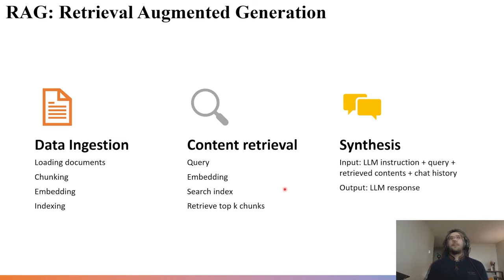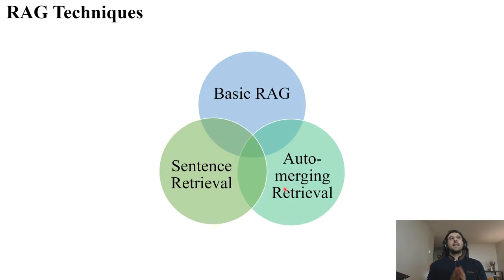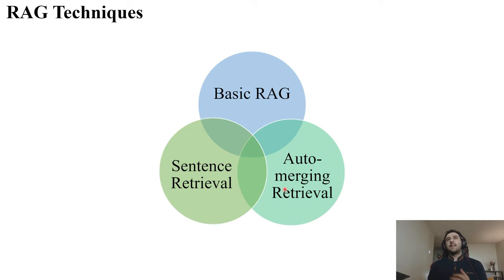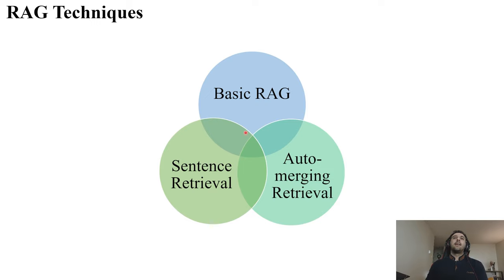I'm going to introduce three well-known techniques in the RAG world, using the names from the LLAMA Index team. They call the conventional technique proposed by Langchain 'Basic RAG,' then they propose 'Sentence Retrieval,' and also 'Auto-Merging Retrieval.' Let's see what these mean.